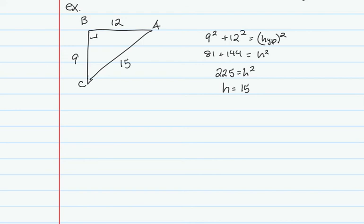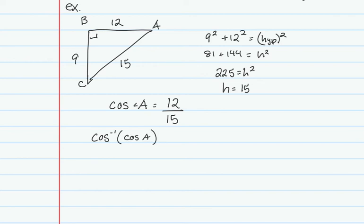So 81 plus 144 equals h squared, giving 225, and taking the square root gives h equals 15. Now I can set up sine, cosine, or tangent to find one of the angles. Going with angle A and using cosine: cosine of angle A equals adjacent over hypotenuse, which is 12 over 15. Taking the cosine inverse of both sides, I can reduce 12 over 15 to four-fifths.